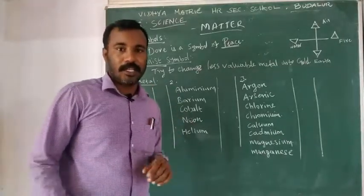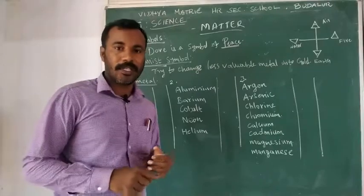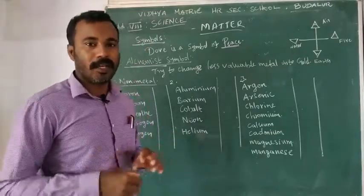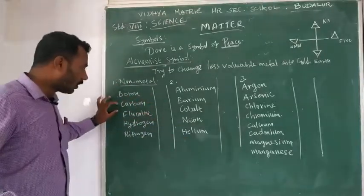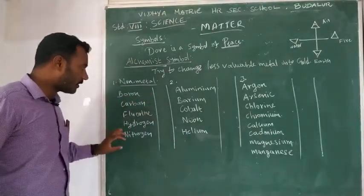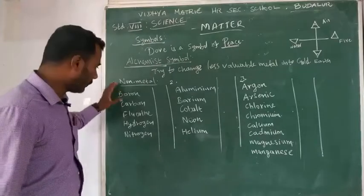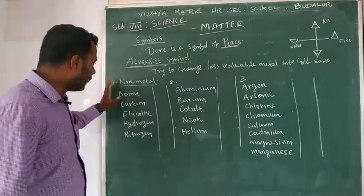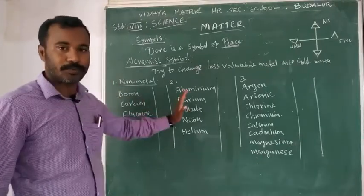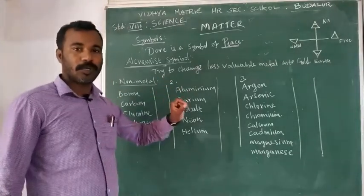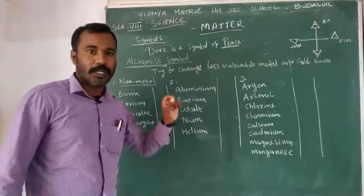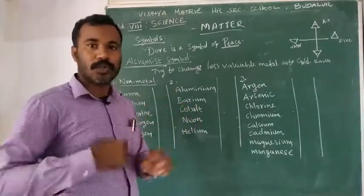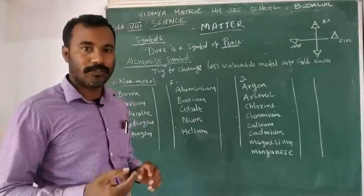In this subject there are metals, non-metals, and metalloids. For example, boron, carbon, fluorine, hydrogen, nitrogen. We will talk about two or three elements in this topic.